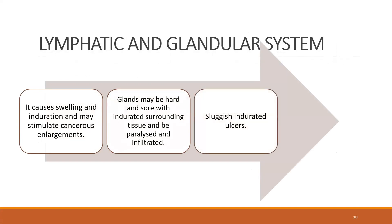Sluggish and indurated ulcers — this is another important thing about carbons. They are sluggish mentally and sluggish physically. Everything is slow; everything is slow to heal. You can compare this with fluoric acid, which also has indurated ulcers that are very slow to heal. So: sluggish, indurated ulcers.